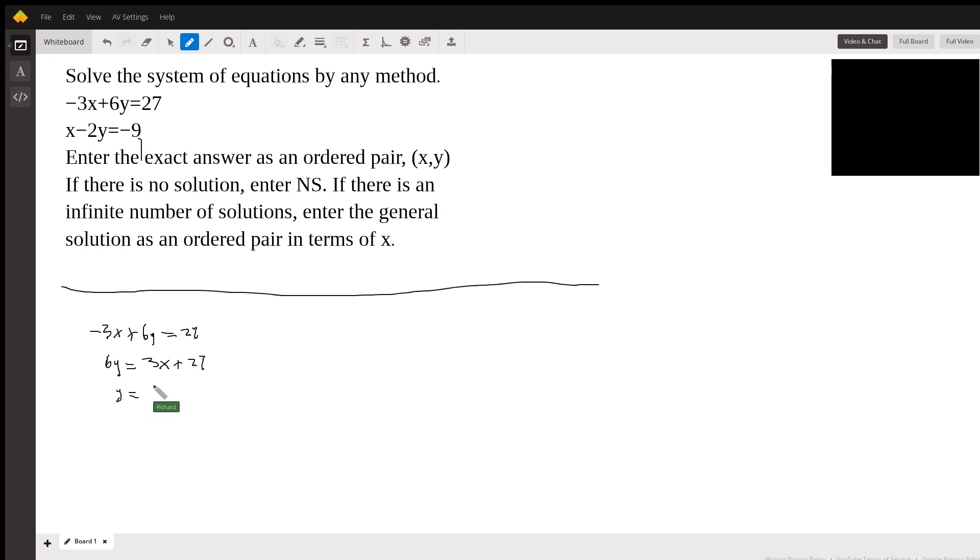So y is going to be one-half x plus 27 over 6. So that reduces to 9 over 2.